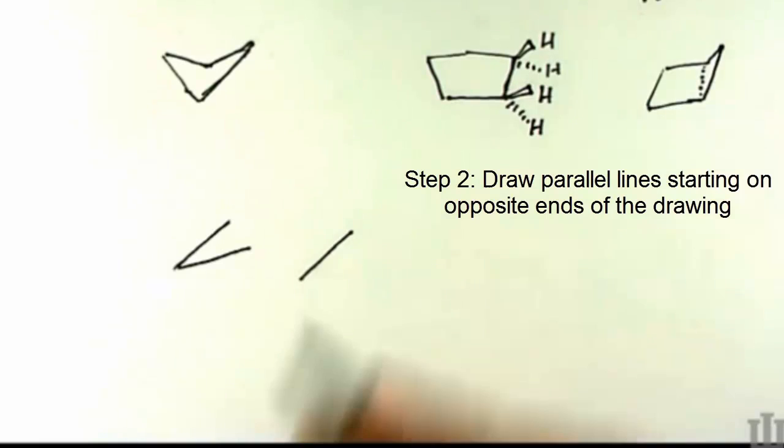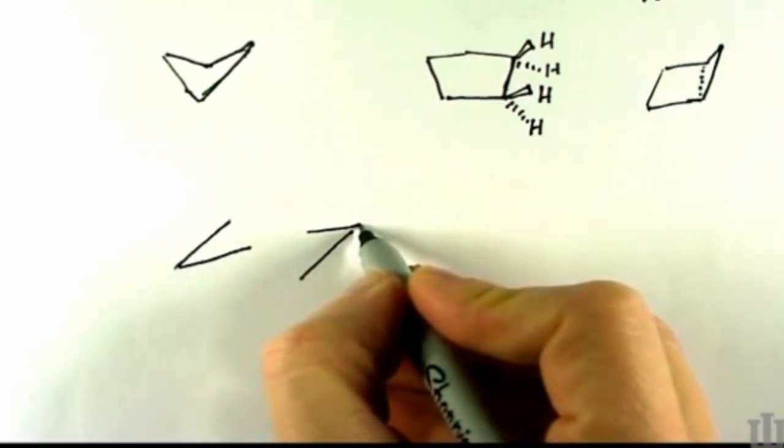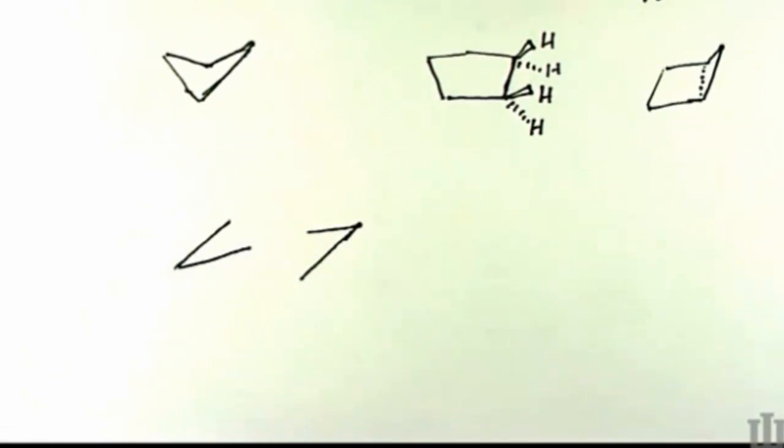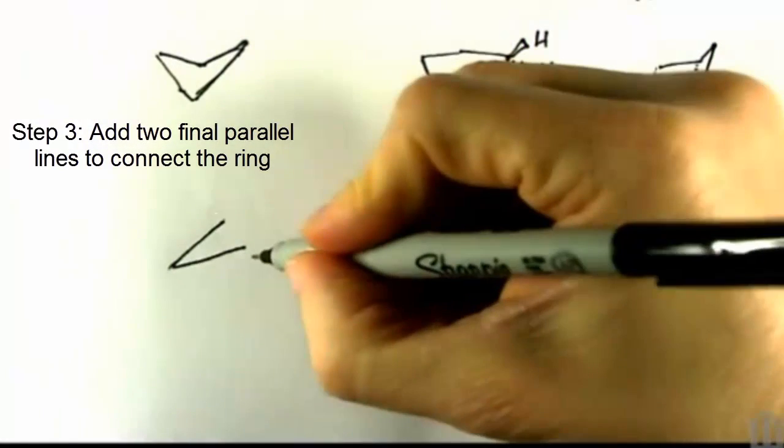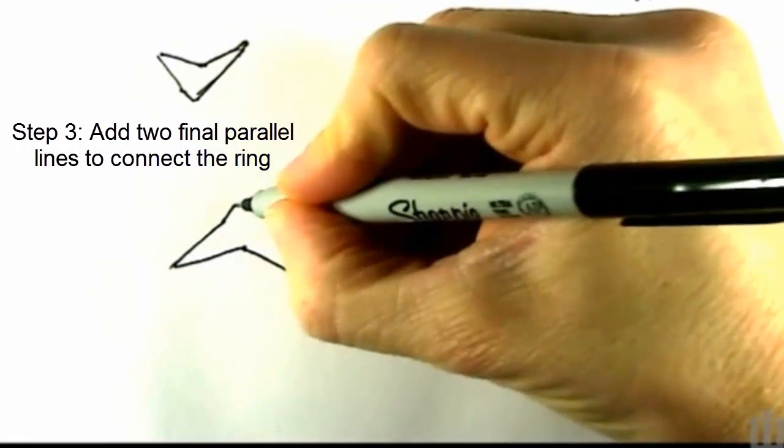And we draw a line parallel to that, fairly parallel to that, from the other corner here. So these two lines are intended to be parallel to one another, and then we draw in lines to connect the remaining corners.